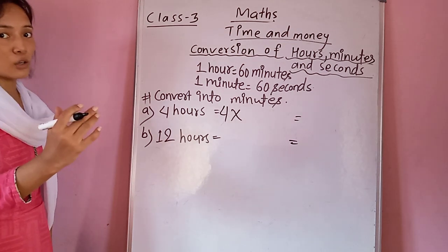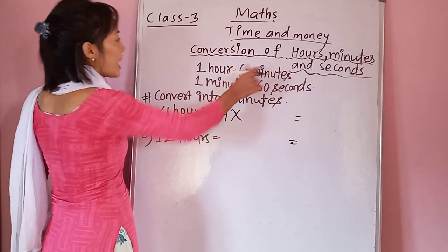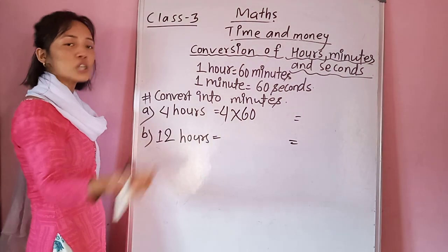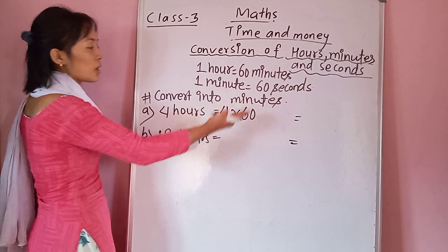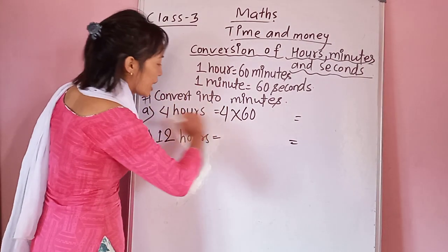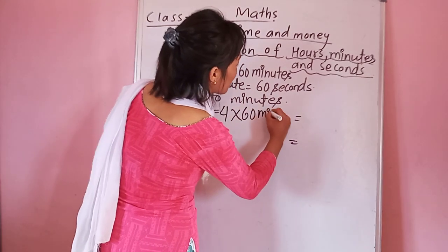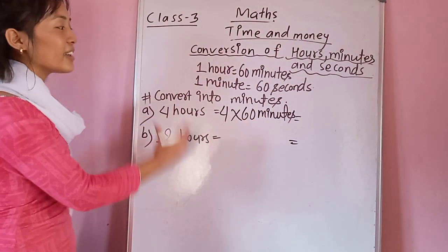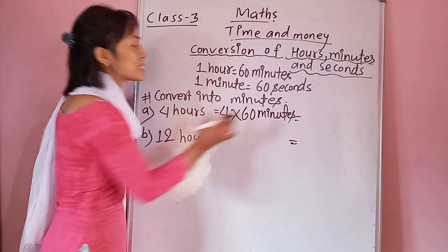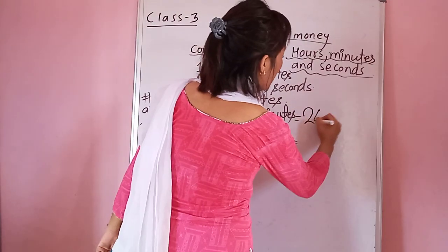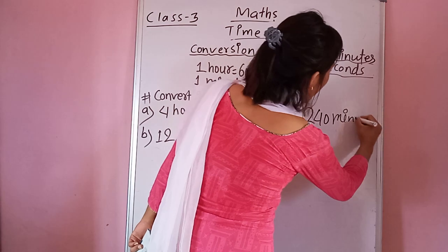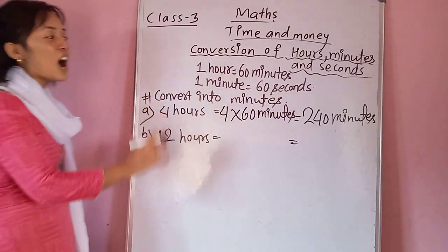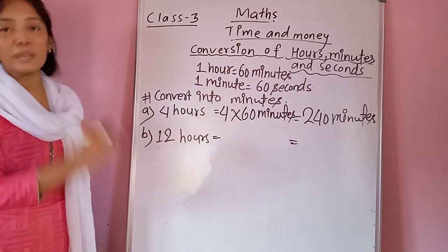The relation between hour and minute is 60, so 4 into 60. Your question is telling you to convert into minutes, so after doing the multiplication by 60 you have to change the unit — instead of hours, write minutes. 4 into 60 gives you 240, and don't forget to write the unit: 240 minutes. So in 4 hours there are altogether 240 minutes.